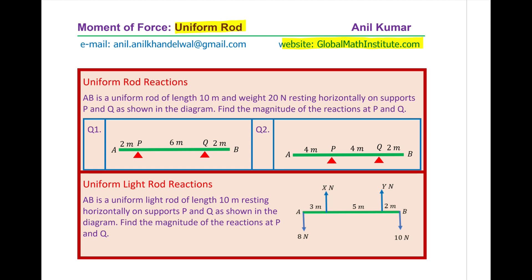The question here is: AB is a uniform rod of length 10 meters and weight 20 newtons, resting horizontally on supports P and Q as shown in the diagram. Find the magnitude of the reactions at P and Q. I'd like you to pause the video, answer these questions, and then look into my suggestions. When you solve questions one and two, you can also derive a general formula — that is important.